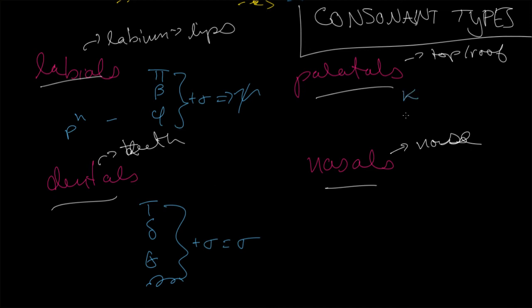Palatals, this was our kappa. And then when the kappa was voiced, it was our gamma. And then when it was aspirated, we had our chi. These, when we add them together with the sigma, we get psi.